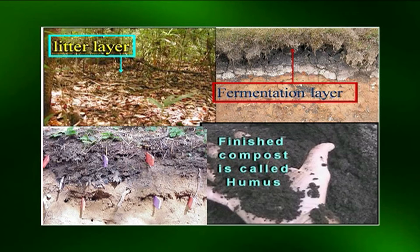Some scientists also designate letters L, F, and H layers for an organic horizon, largely representing different degrees of decomposition. The L layer represents the litter layer formed of recognizable plant and animal remains, followed by the F layer or fermentation layer, usually consisting of a mixture of organic matter in different stages of decomposition, and the H or humose layer, consisting largely of humified material with little or no plant structure visible.